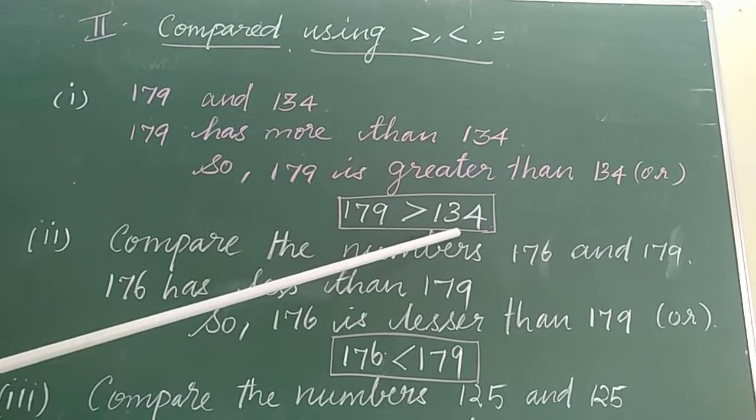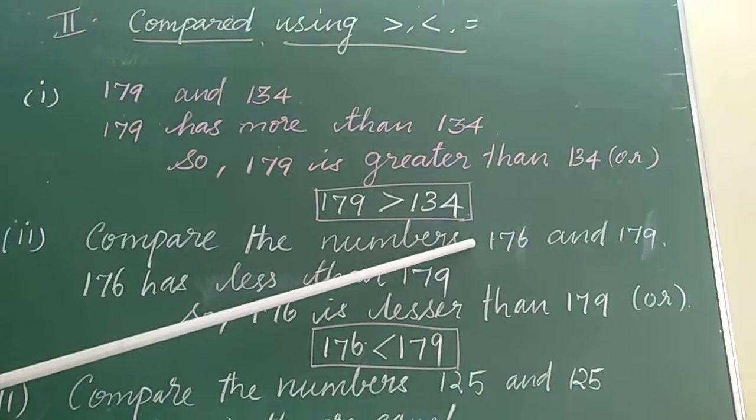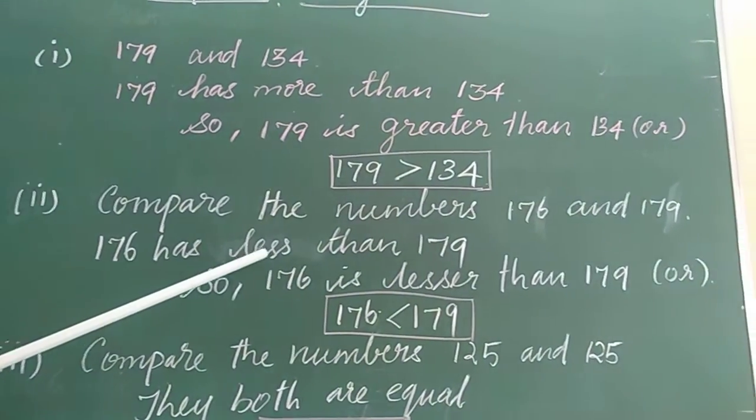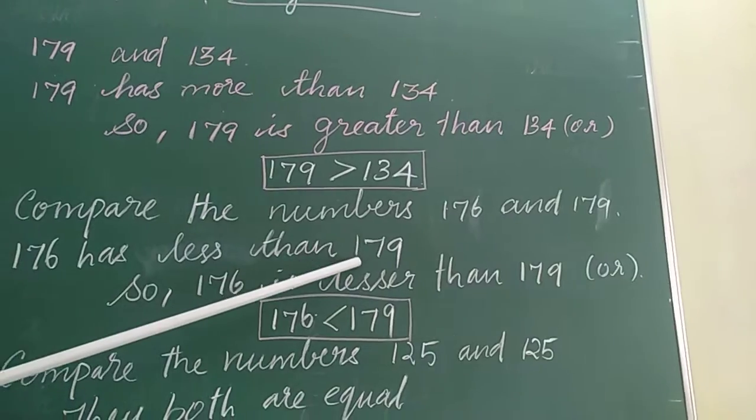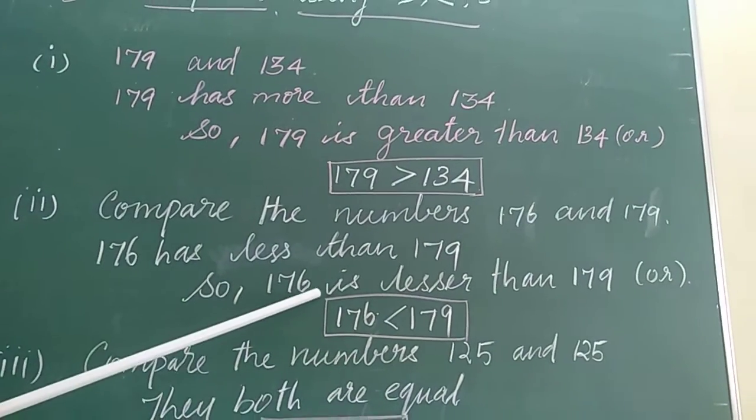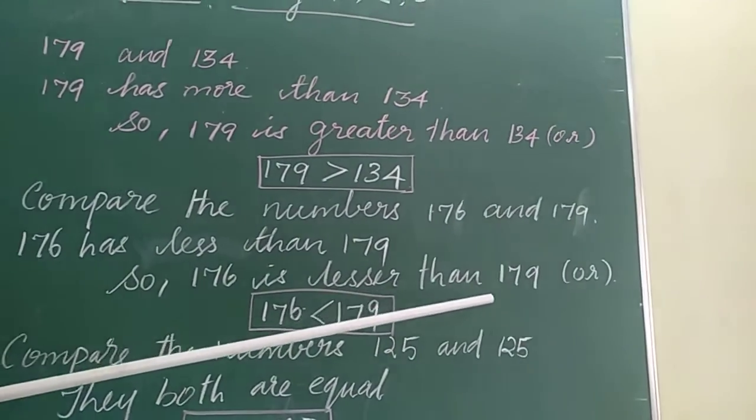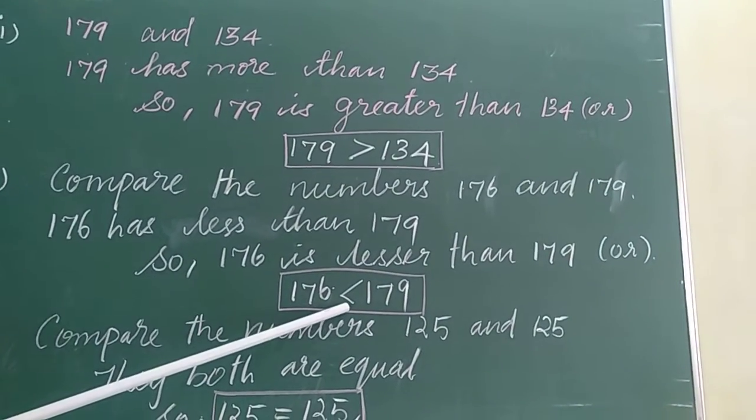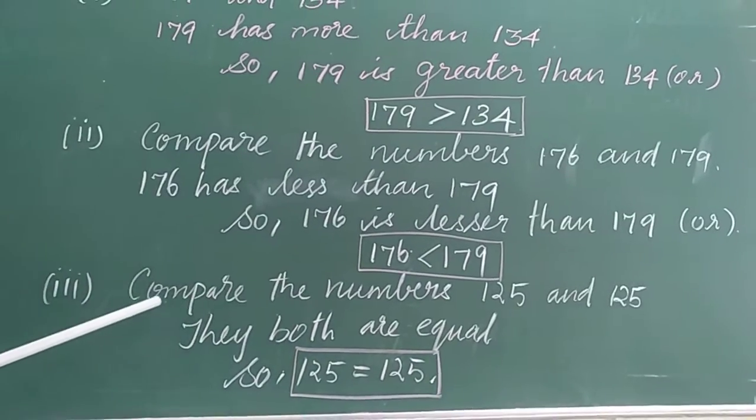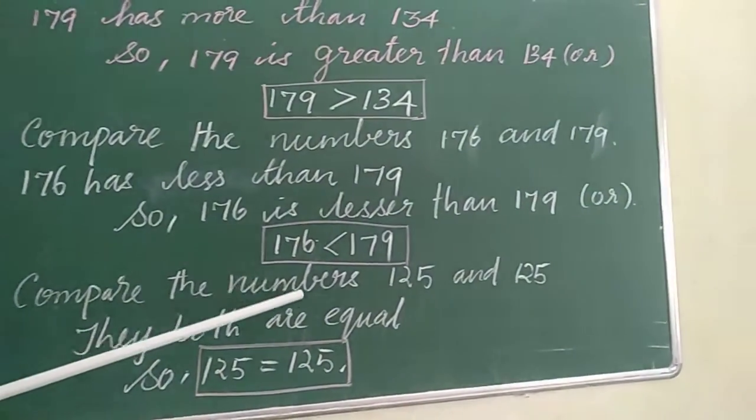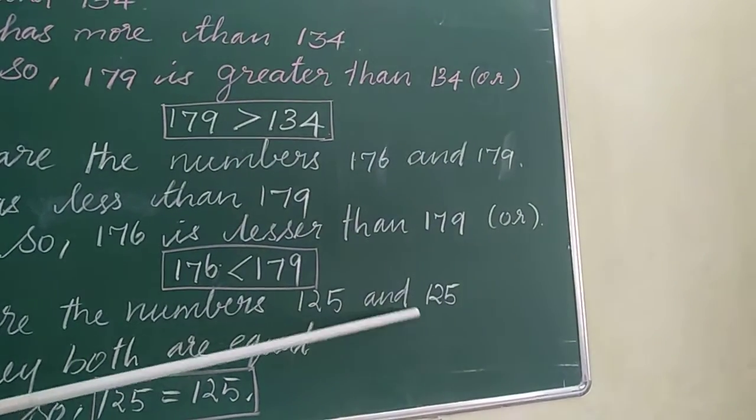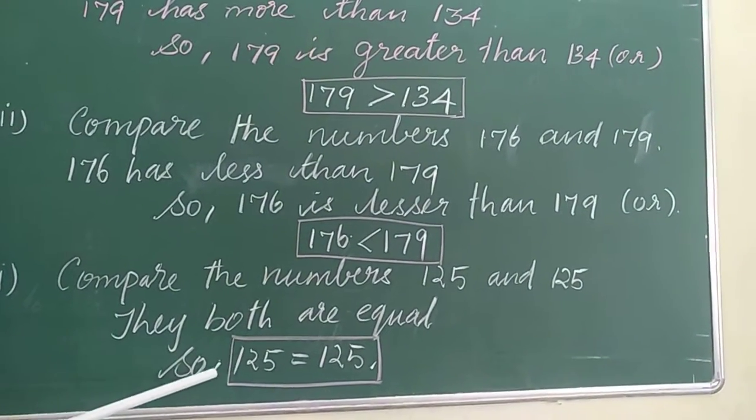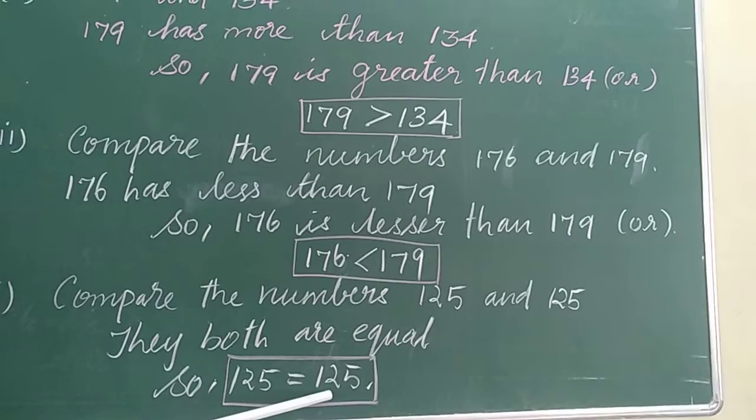Now, come to the lesser. Compare the numbers 176 and 179. Here, 176 has less than 179. So, 176 is lesser than 179, or 176 lesser 179. Then, third one is equal. Compare the numbers 125 and 125. They are both equal. So, 125 equals 125.